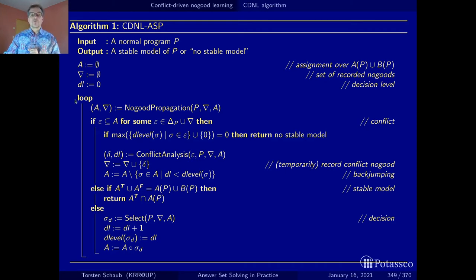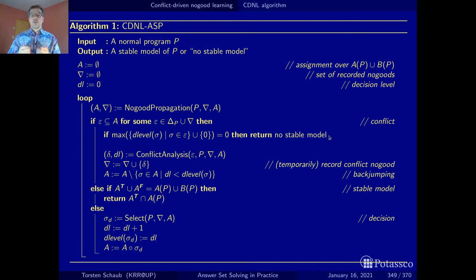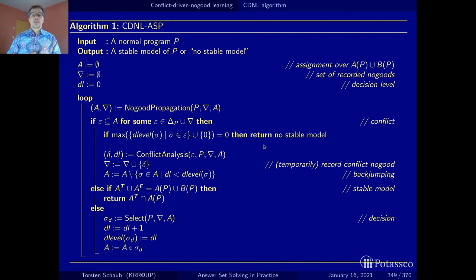Now let's come to the case where we encountered a conflict. Encountering a conflict means we have a witness — a conflict no-good that is part of the current assignment. If all decision levels in this conflict no-good are zero, we have a conflict that indicates unsatisfiability and we return the information that there is no stable model, because all literals of the no-good are in the initial stretch independent of any choices — obtained just by propagation from the original completion and loop no-goods.